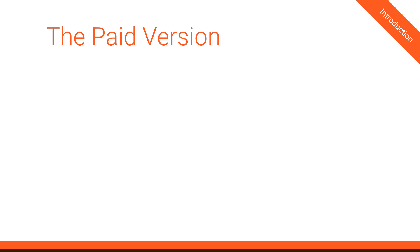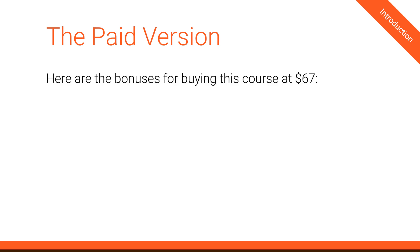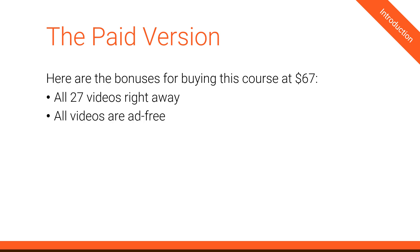It's on IamTimCorey.com — there's a link down below. If you buy my course for $67, I will give you the following extras. First of all, you get all 27 video lessons right away — you don't have to wait for them like you do on YouTube. Every one of them is ad-free. On YouTube you'll see little ads here and there, plus the YouTube ads, but on my site they're all ad-free.